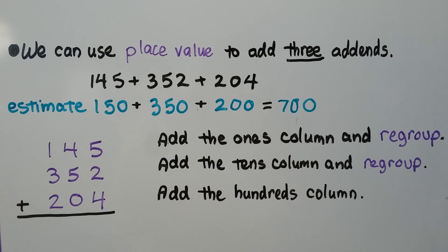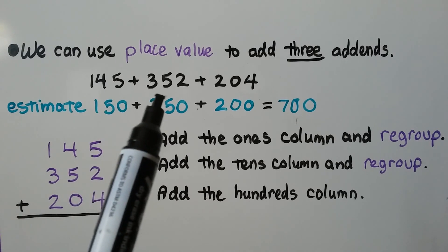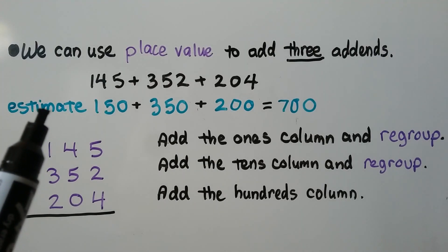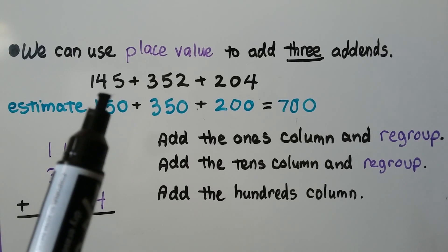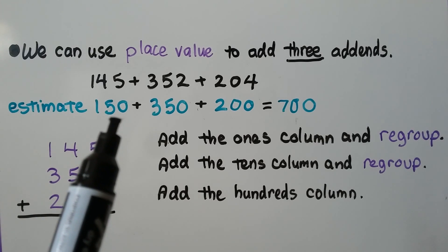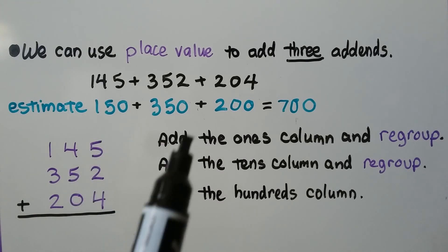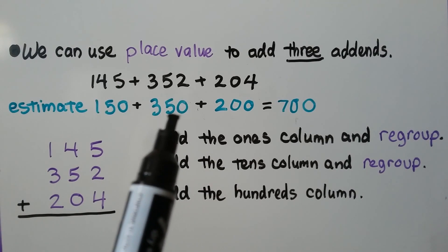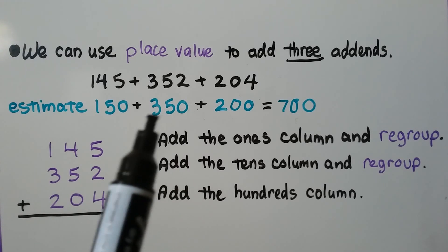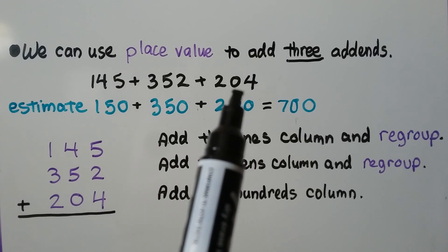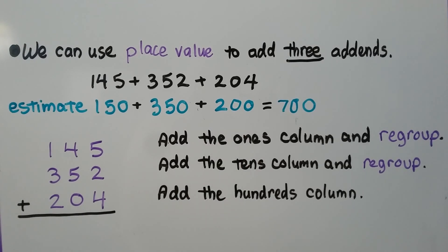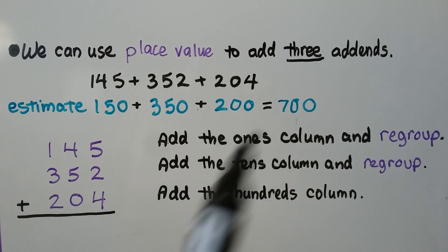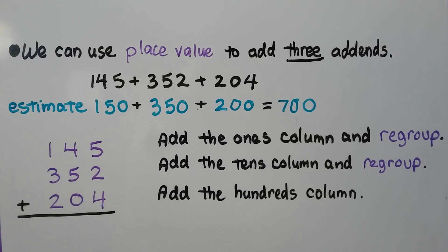We can use place value to add three addends — we could even do four or five or more. We have 145 plus 352 plus 204. We estimate by rounding to the nearest tens place: 145 rounds to 150, 352 rounds to 350, and 204 rounds to 200. Adding 150 plus 350 plus 200 gives us 700, so our answer should be about 700.